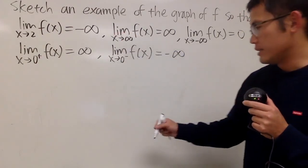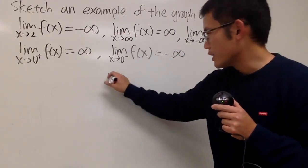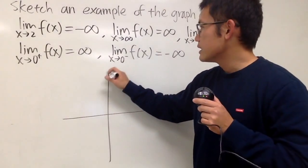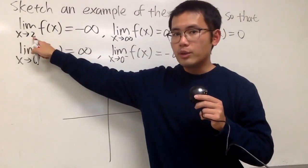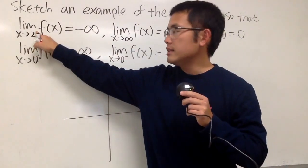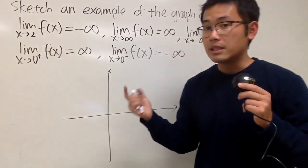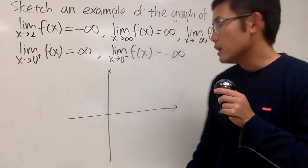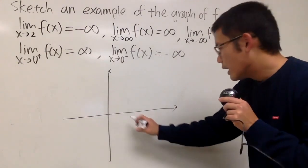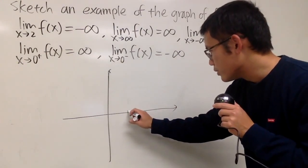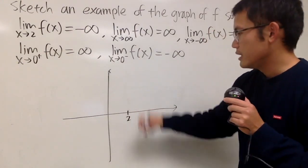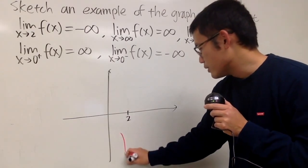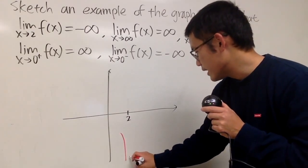Let's go ahead and start with the first one. So here we go. For the first one, it says the limit as x approaching 2. Notice that there it does not have the plus or minus, so that means both directions. We will end up with negative infinity for the limit. So let's say I'm going to label this right here to be 2. From both the left-hand side and right-hand side, negative infinity goes down like this, and likewise for that.